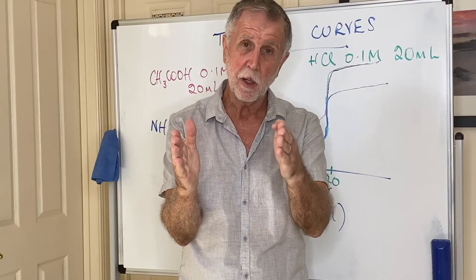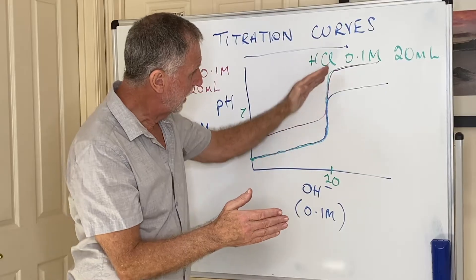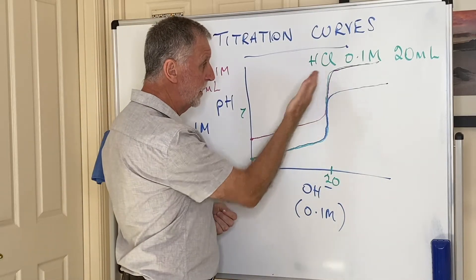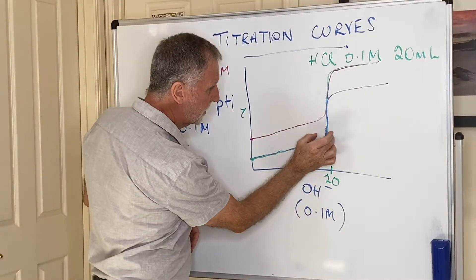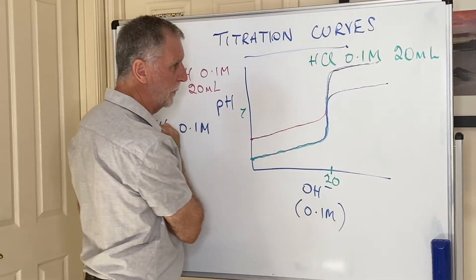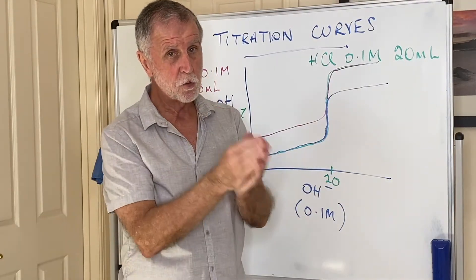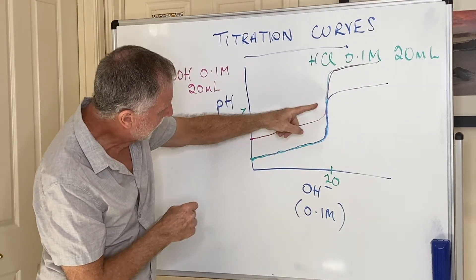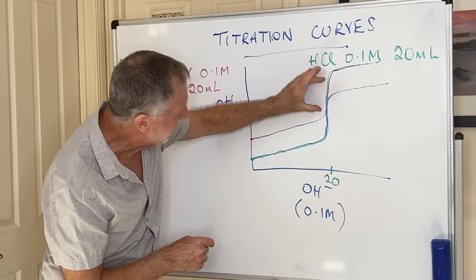Indicators start changing color at a certain pH and then change over maybe one or two pH units before becoming the other color. The range of the indicator determines which indicator is needed for different titrations. For a strong acid with a strong base, because there is such a large change in pH, many indicator ranges will fit — so you can use pretty much any indicator.